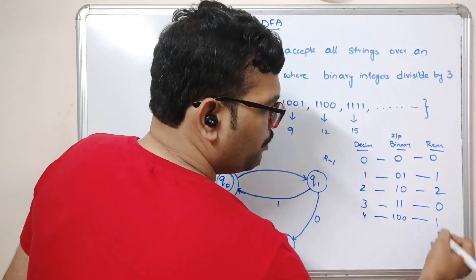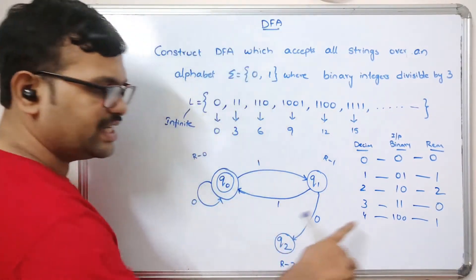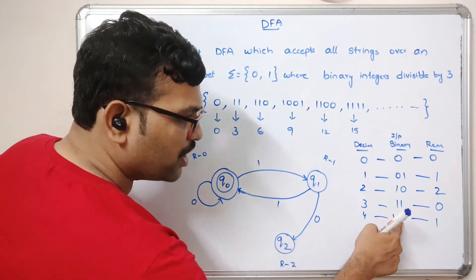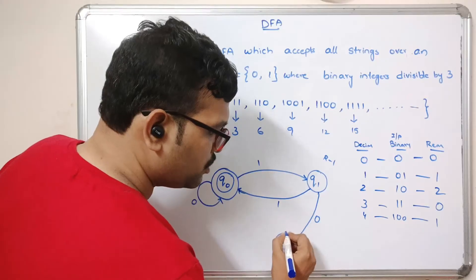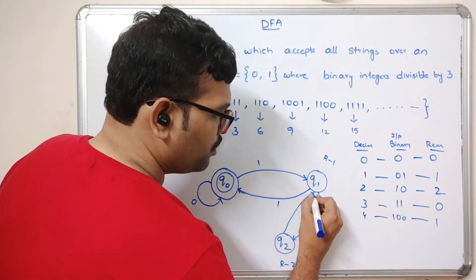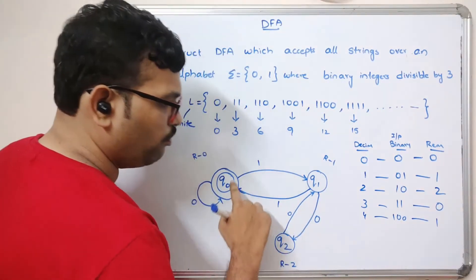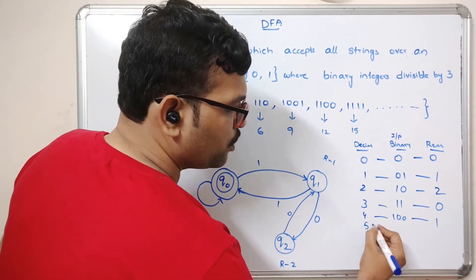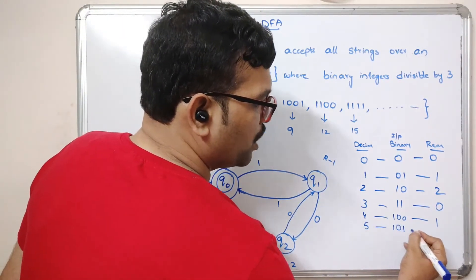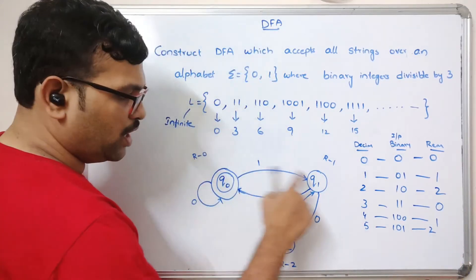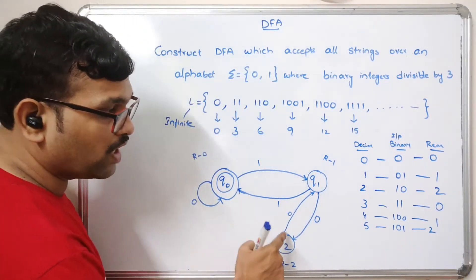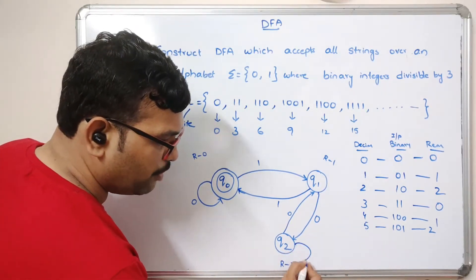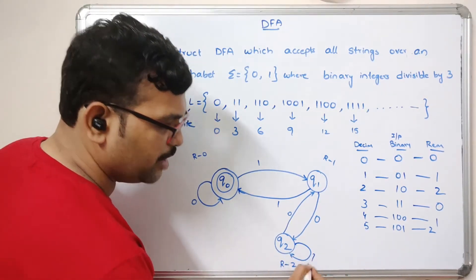Continuing: decimal 4, binary 100, remainder 1 — so Q2 on 0 moves to Q1. Decimal 5, binary 101, remainder 2 — Q2 on 1 stays in Q2 (self-loop on remainder 2). These transitions follow directly from tracking the remainder as each new bit is appended.